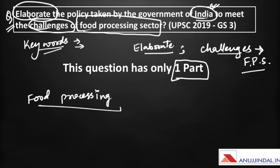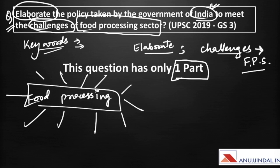You should involve yourself in a 360-degree analysis of food processing before going into the examination. A 360-degree analysis would include the challenges, the opportunities for India, the past performance of India, the future potential of India in food processing, the global scenario in food processing, and the disadvantages of food processing as well. This will ensure that whatever question might be asked in the future from food processing, you should be able to answer it in the UPSC exam.